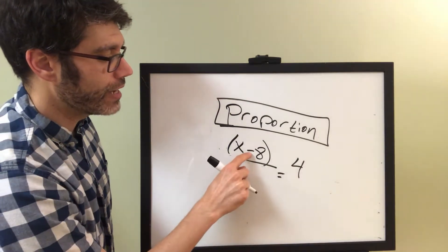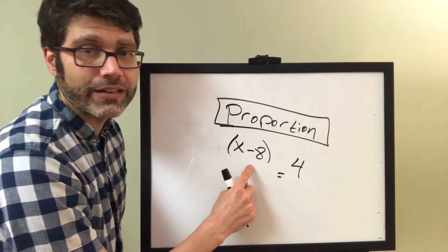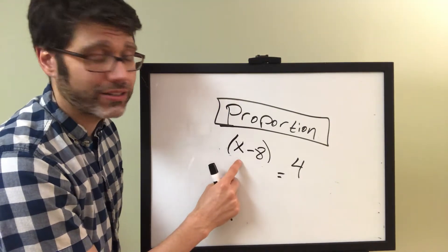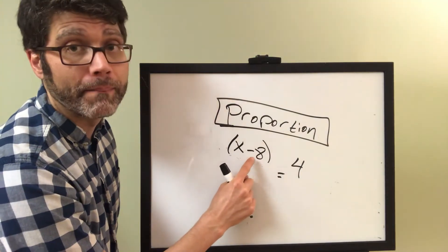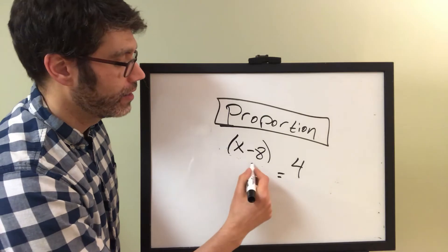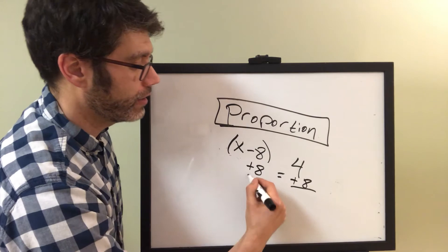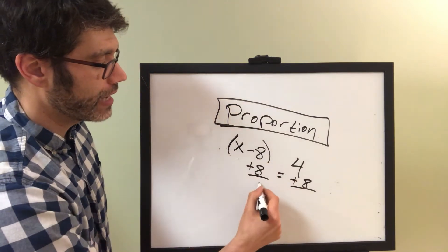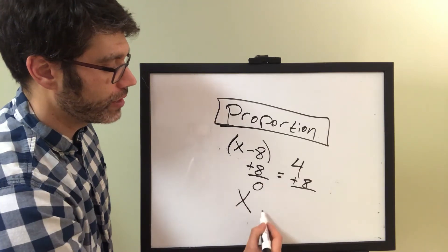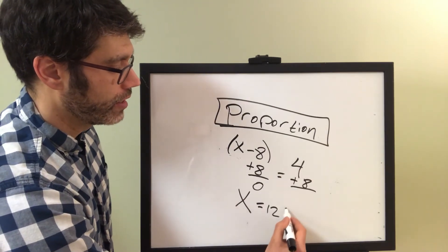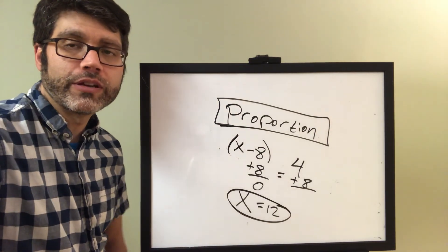How do I get rid of this negative 8 so that we're isolating just x? Well, let's do its inverse operation. Since it's subtracting 8, we need to add an 8. And whatever you do to one side, you have to do to the other. So, this cancels out to 0. And you're just left with the x on this side. And then here, 4 plus 8 is 12. So, x equals 12. We just solved for it.